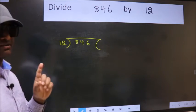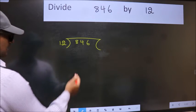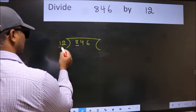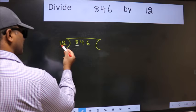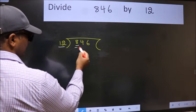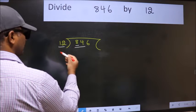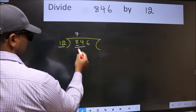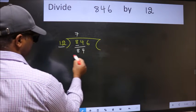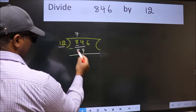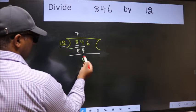Next, here we have 8 and here 12. 8 is smaller than 12, so take two numbers: 84. When do we get 84 in 12 table? 12×7=84. Now we should subtract, we get 0.